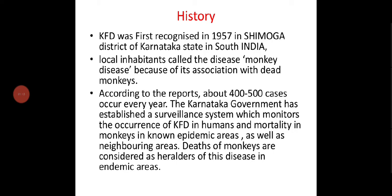According to reports, about 400 to 500 cases occur every year. The Karnataka government has established a surveillance system which monitors the occurrence of KFD in humans and mortality in monkeys in non-epidemic areas as well as neighboring areas. Deaths of monkeys are considered heralders of this disease in endemic areas.